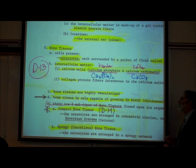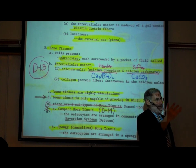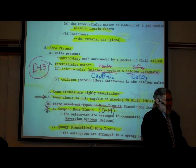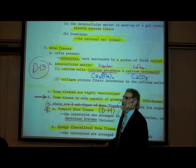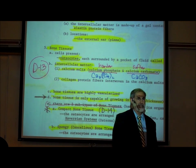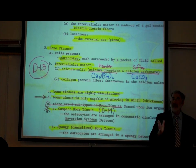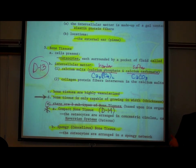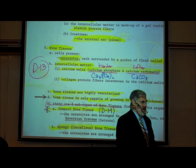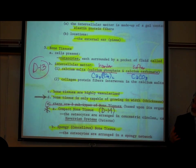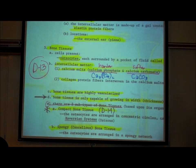Bone tissue is highly vascularized. When you're holding a dry bone, you might think it has no blood vessels — that's because it's just dried calcium mineral with no living cells. But in real life, if you break a bone it bleeds, because there are blood vessels running within it. It is living tissue; if you break a bone, it grows back together because there are living cells in it.